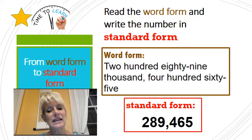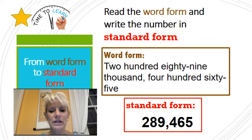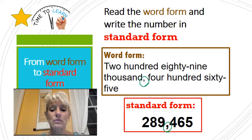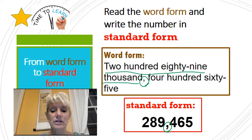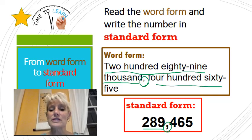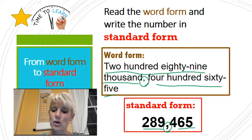The next one is taking word form and putting it into standard form. Remember, word form is just how we read it. Remember that clue: the comma is there to separate when we have thousands versus when we have hundreds, tens, and ones. Notice this — two hundred eighty-nine thousand, and then four hundred sixty-five. Notice right here: two hundred eighty-nine thousand, then four hundred sixty-five. Kind of cool, isn't it?